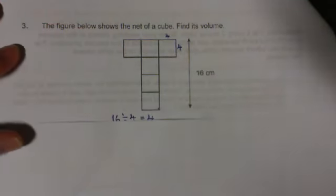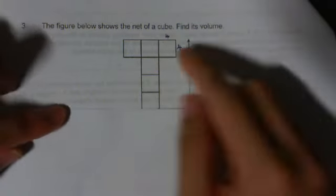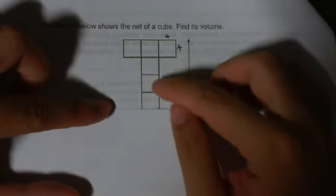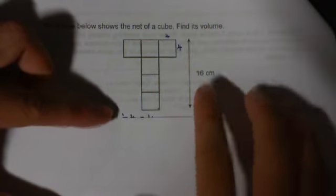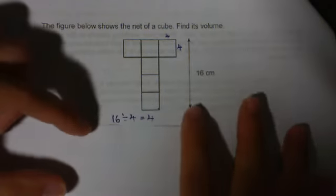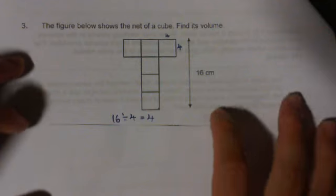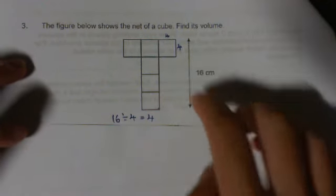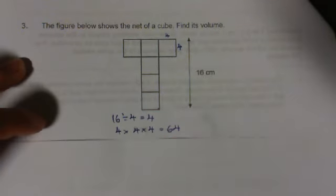Now, I know for a fact that in a cube all sides are the same. So if I have 1, 2, 3, 4, and this is 16, I can find the side. It's simply 16 divided by 4 equals 4. And because the side is 4, 4 times 4 times 4 equals 64.